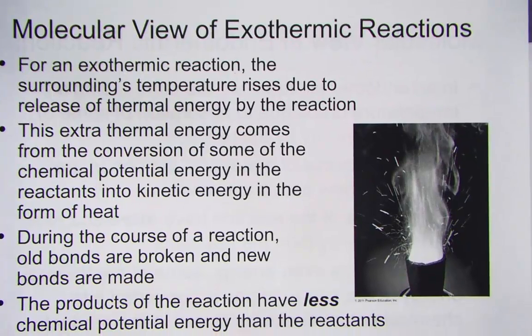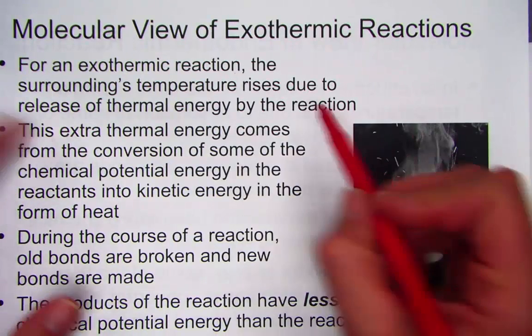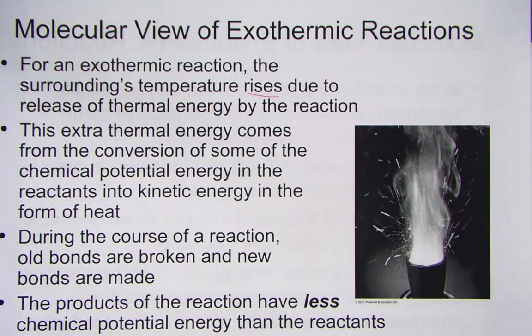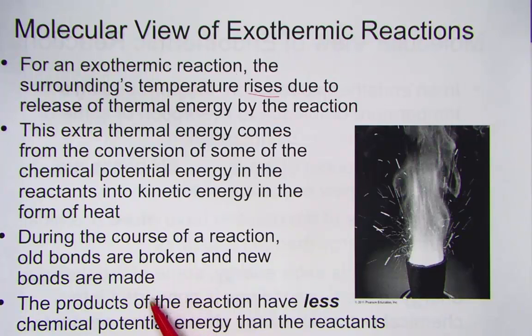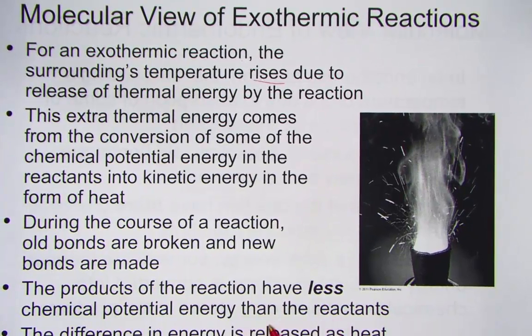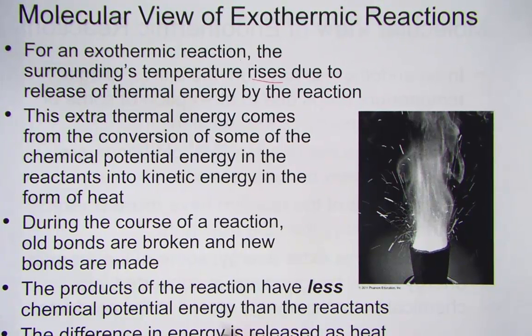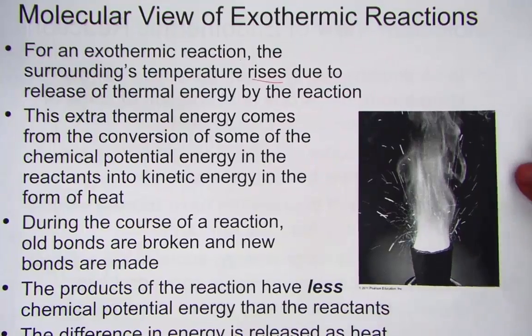Taking a closer look at a molecular view of exothermic reactions: the surrounding temperature rises due to the release of thermal energy by the reaction. This extra thermal energy comes from the conversion of some of the chemical potential energy in the reactants into kinetic energy in the form of heat. Old bonds are broken and new bonds are made. If the products have less chemical potential energy than the reactants, that difference in energy is released as heat.